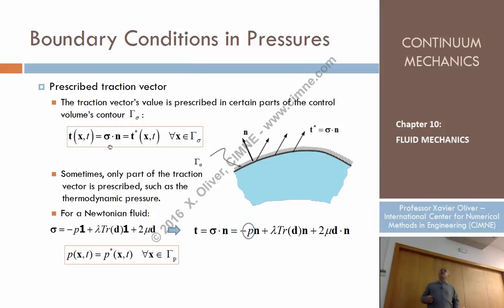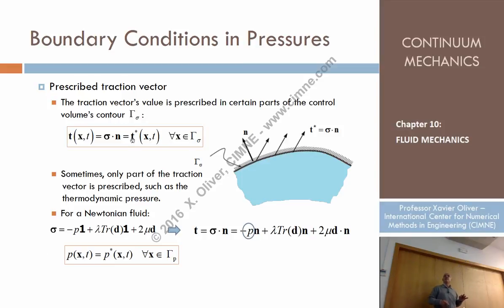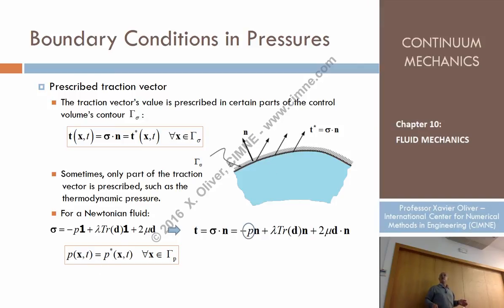We can also have force boundary conditions. As in solids, where sigma dot n (the traction vector) takes a known value, in fluid mechanics the most common case is that only one part of the traction is prescribed — the pressure. Sometimes we impose that the pressure is known at a prescribed boundary, called gamma_sigma.